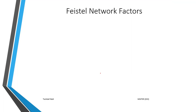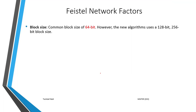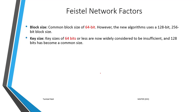Next, we will see some important Feistel network factors. The first factor is block size. The common block size used in the Feistel structure is 64 bits. However, new algorithms can use 128-bit to 256-bit block sizes. A key size of 64 bits is mostly used, but it is now considered insufficient, so 128 bits has become the common size.